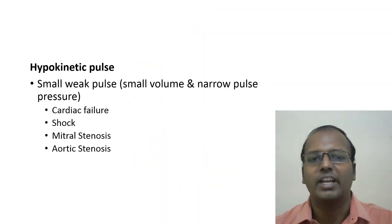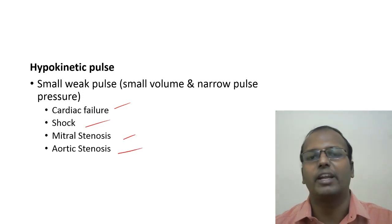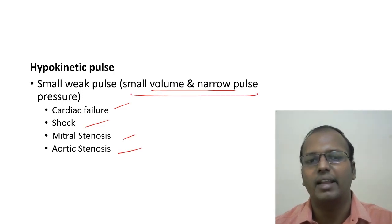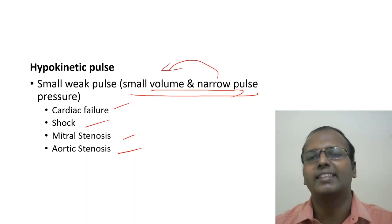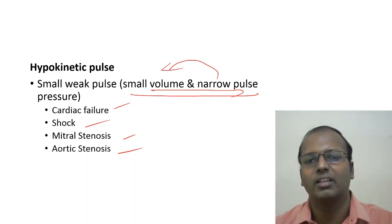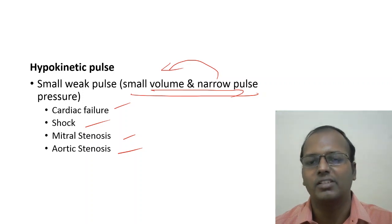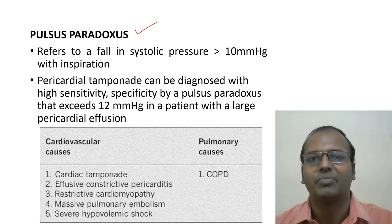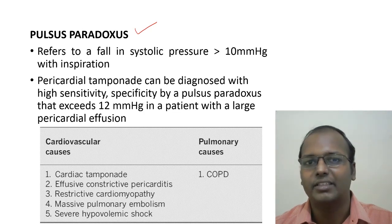Hypokinetic pulse is a small, weak pulse with narrow pulse pressure occurring in cardiac failure, shock, mitral stenosis, or aortic stenosis. Narrow pulse pressure (less than 30 mmHg) indirectly suggests small volume pulse.